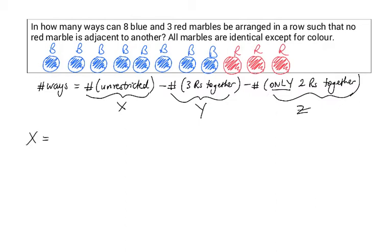Let's find x first. The number of ways you can arrange in a row 11 different objects is 11 factorial. But since out of this 11 we have 8 identical objects being the blue marbles and also another 3 identical objects being the red marbles, we need to divide this expression by 8 factorial and 3 factorial. And this gives x equals 165.